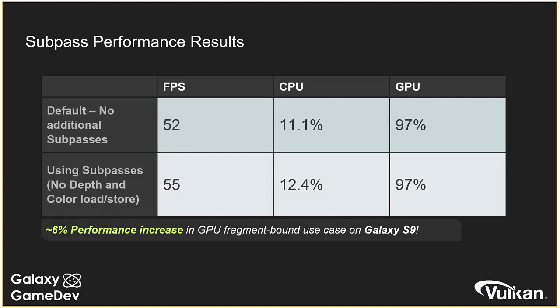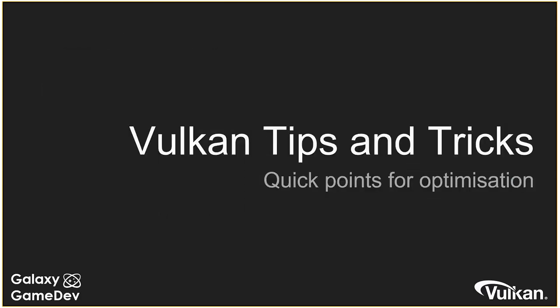The CPU usage went up slightly because we're pushing three extra frames per second with the associated CPU cost of generating those frames. I'm now going to hand over to Callum, who's going to go through a couple of quick tips and tricks. Hi, I'm Callum Shields, an engineer at Samsung UK's Galaxy Game Dev Team. For the next few slides I'll take you through a few more small but no less important optimizations for mobile.